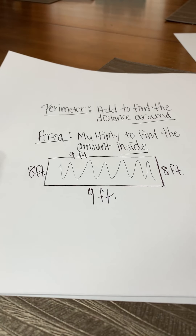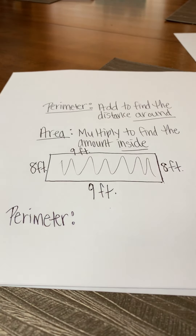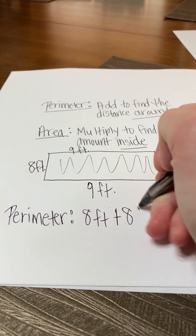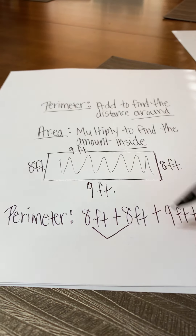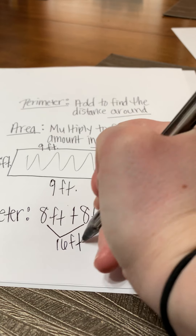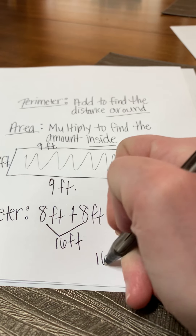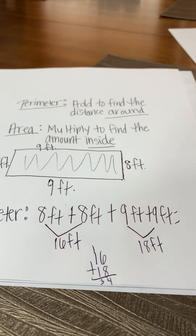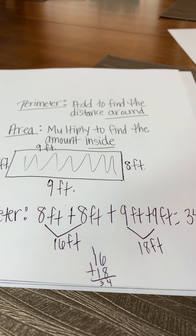To find my perimeter, I am going to add to find the distance around the outside. So I'll take my eight feet plus eight feet plus nine feet plus nine feet. Eight plus eight is 16 feet, nine plus nine gives me 18 feet. And then when I add up my 16 plus my 18, I get 34. So my total for my perimeter is 34 feet.